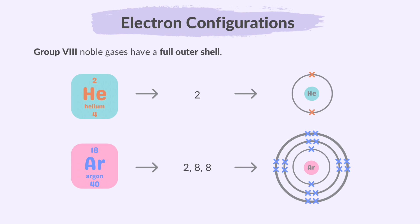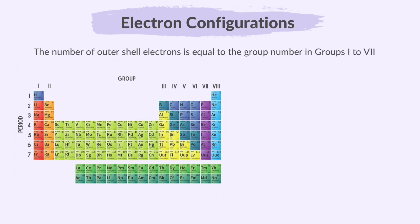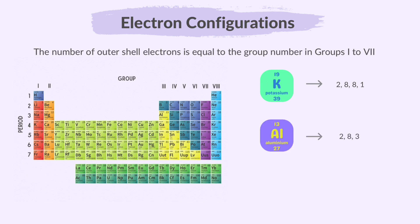Noble gases do not react with other elements because they are satisfied with their electron configuration. The number of outer shell electrons is equal to the group number in groups 1 to 7. For example, potassium has one electron in its outermost shell, so it is in group 1. Aluminium has three electrons in its outermost shell, so it is in group 3. And fluorine has seven electrons in its outermost shell, so it is in group 7.